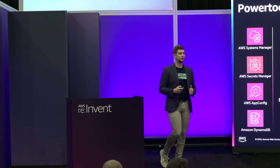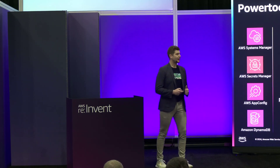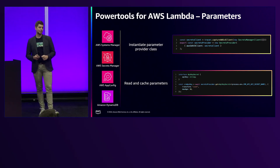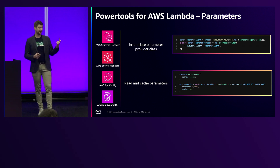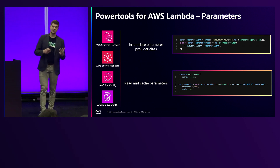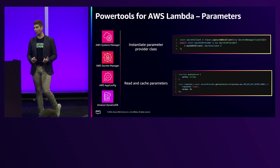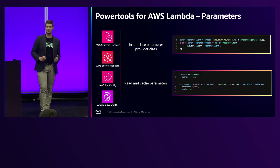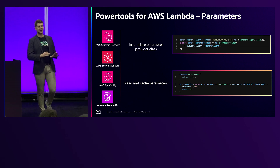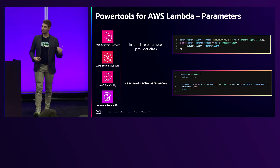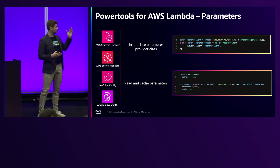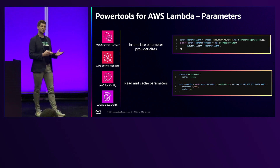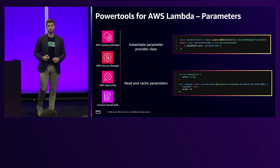But it took us some time to recover from our failure. That's because I'm using the parameters utility from Power Tools for AWS Lambda. It is a utility with a common API to retrieve parameters from either Systems Manager, Secrets Manager, AppConfig, or DynamoDB. What's handy about it — not only does it have a common API across all these sources — it also enables you to cache results in the Lambda function. I've personally written this caching logic hundreds of times. With Power Tools parameters, you have a simple utility to retrieve the data, automatically transform it from a JSON string to a JavaScript object, and specify how long parameters should be cached in your Lambda invocation.